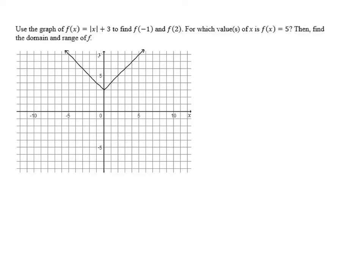Use the graph of f of x equals the absolute value of x plus 3 to find f of negative 1 and f of 2. For which values of x is f of x equal to 5? Then find the domain and range of f.